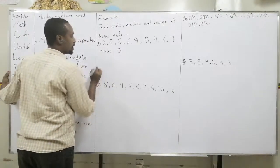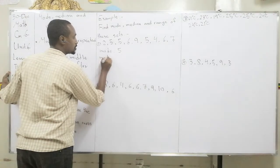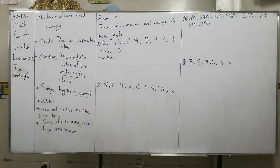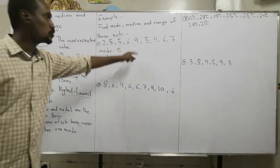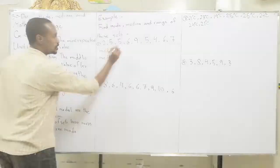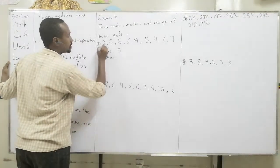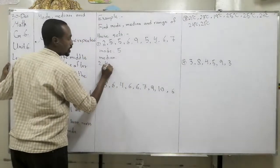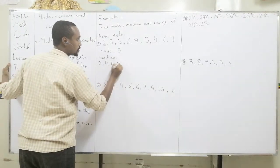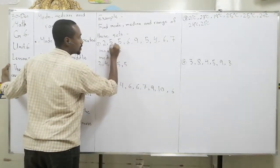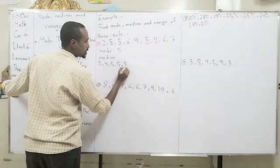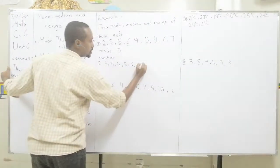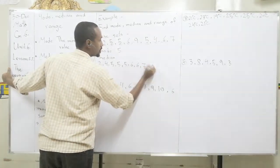That means the mode is five. Now, median. Before you start to find the median — the number in the middle — you should first order the numbers. So let's order it: 2, 4, 5, 5, 5, 6, 6, 7, 9.